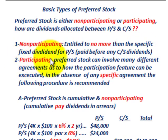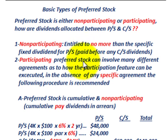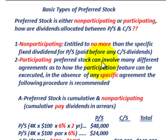For participating preferred stock, that can involve many different agreements as to how the participation feature is executed. In the absence of any specific agreement, the following procedure is recommended. After the preferred stock gets paid its regular stated dividend, there's also the case where preferred stock can share with the common stock on dividend payments, and this is what we'll look at when there isn't any specific agreement.